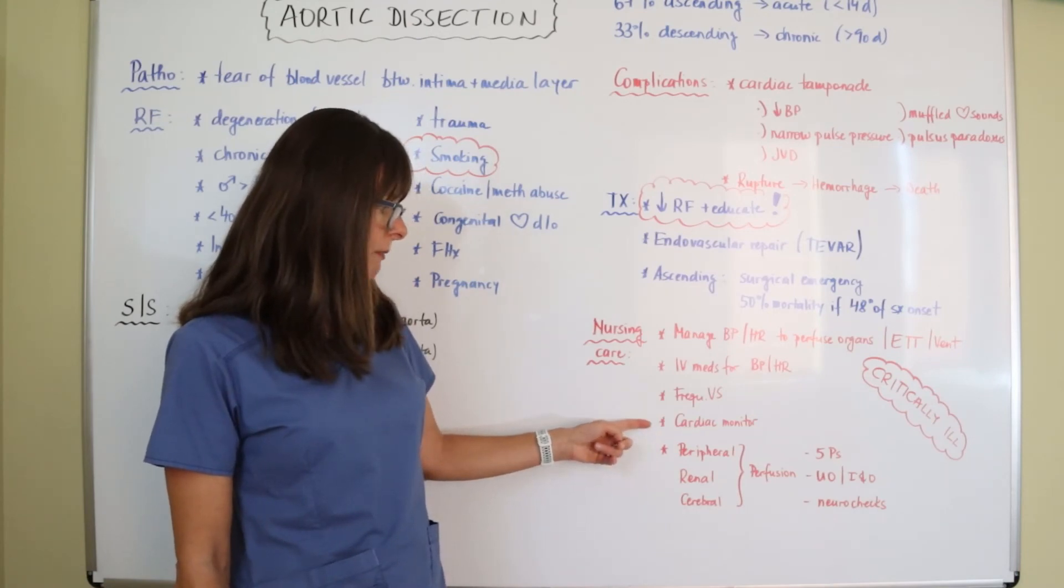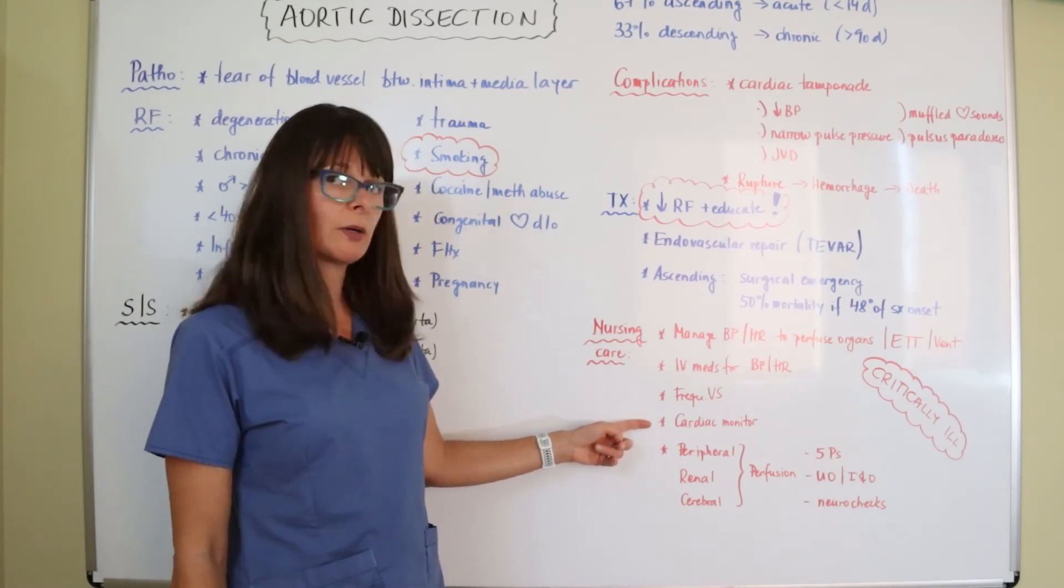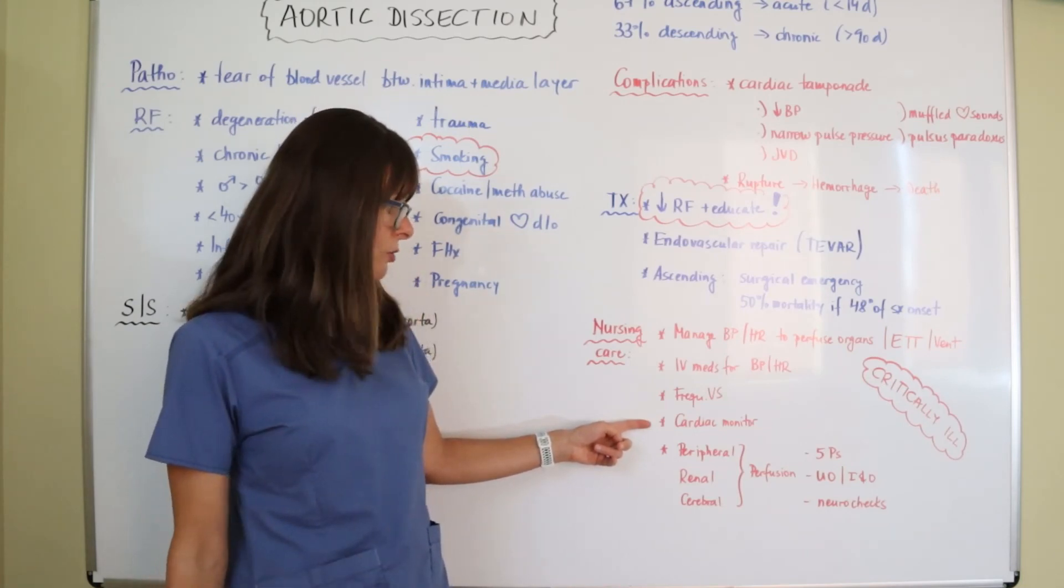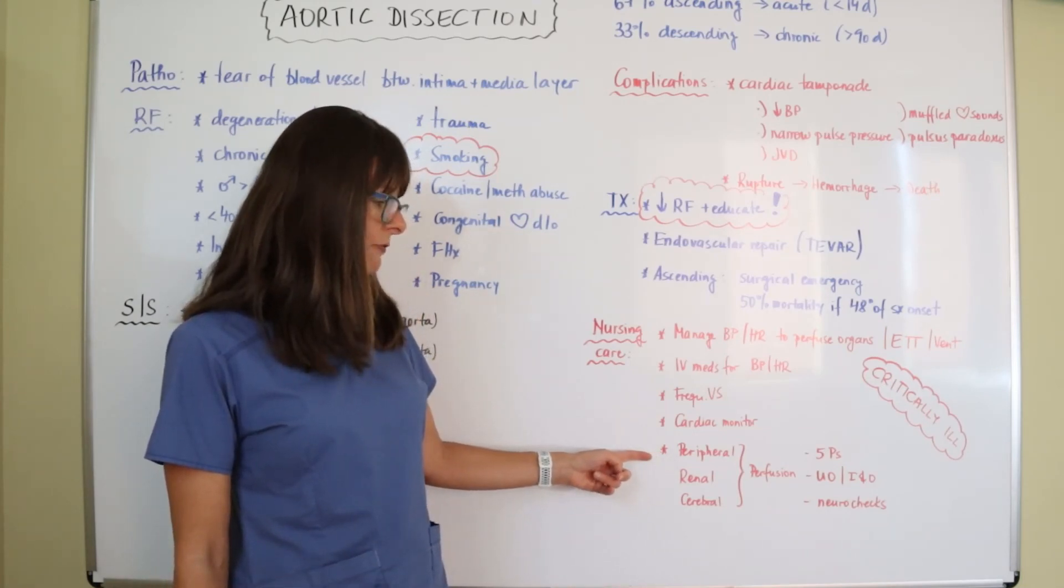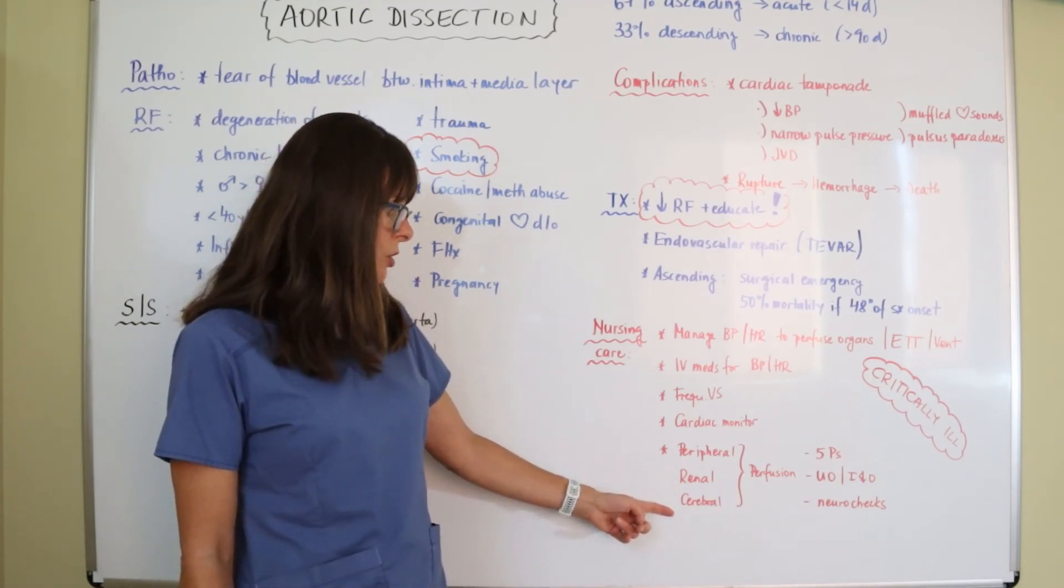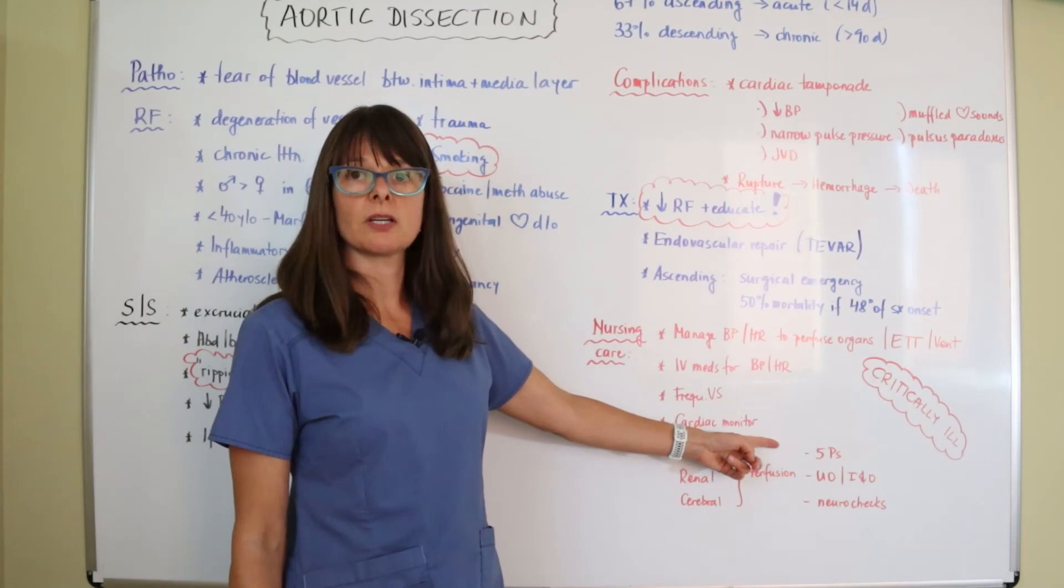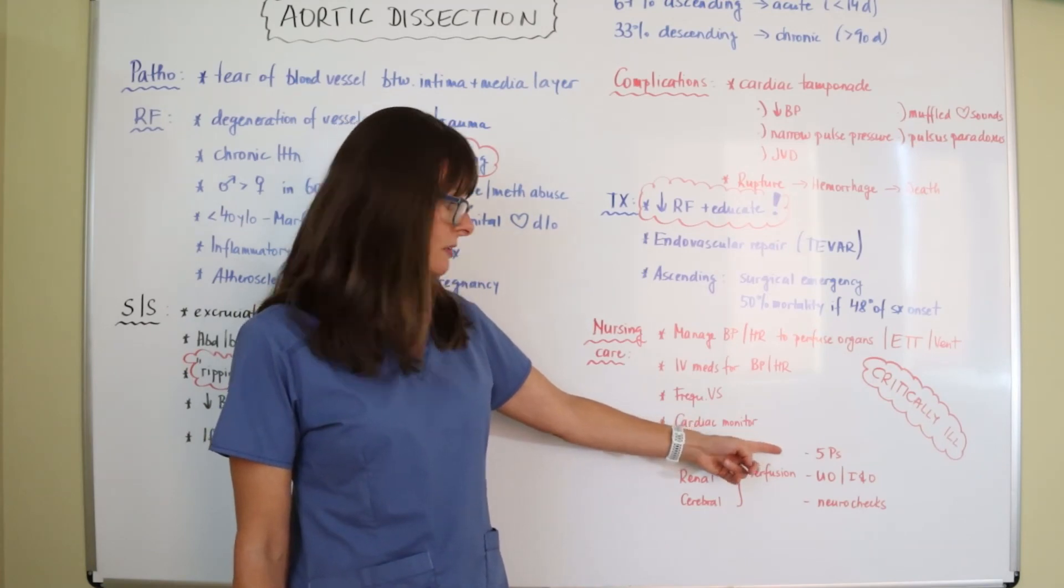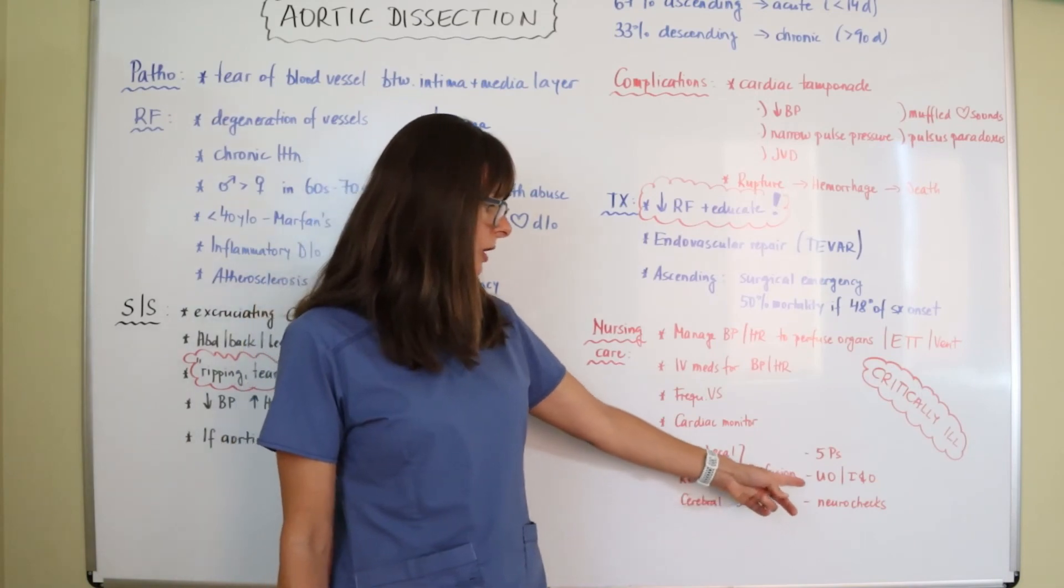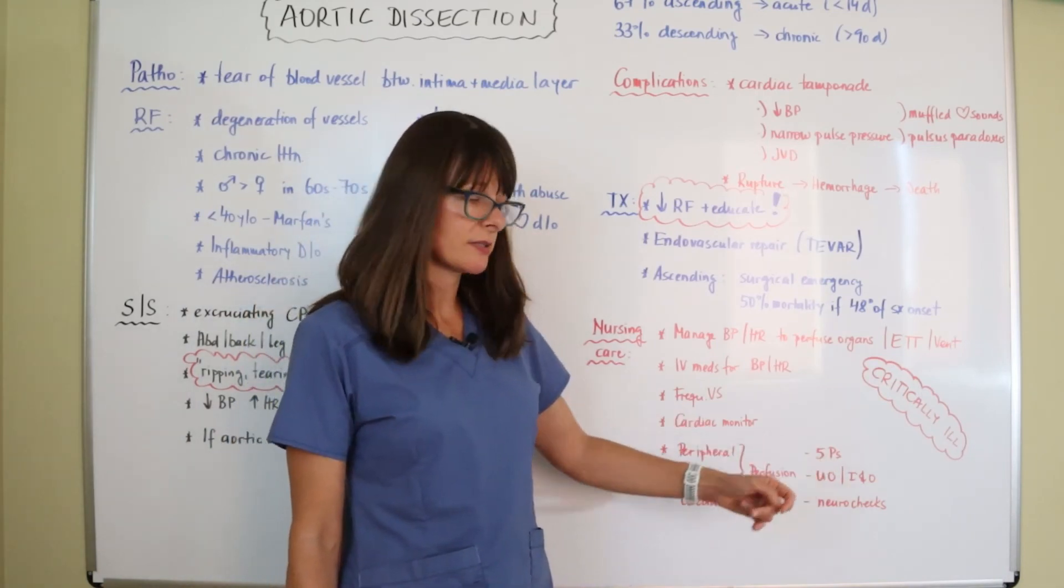They need to be on a cardiac monitor and then we need to check their perfusion because their major blood vessel is impaired. So we need to make sure do they get enough perfusion to the periphery, to their kidneys, as well as their brain. So we'll check their five Ps, check the extremities for pallor, check their pulses, as well as for the renal condition, check the hourly urine output as well as their I's and O's.